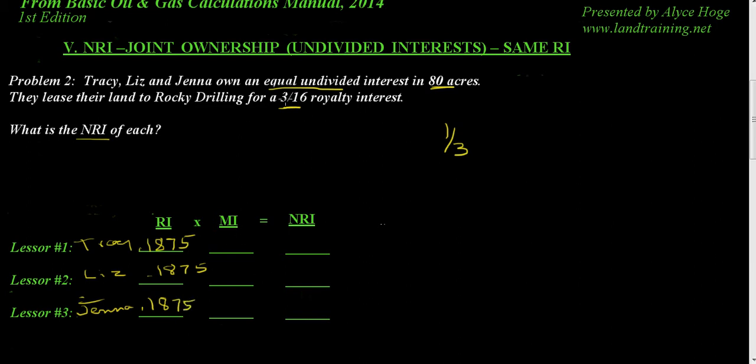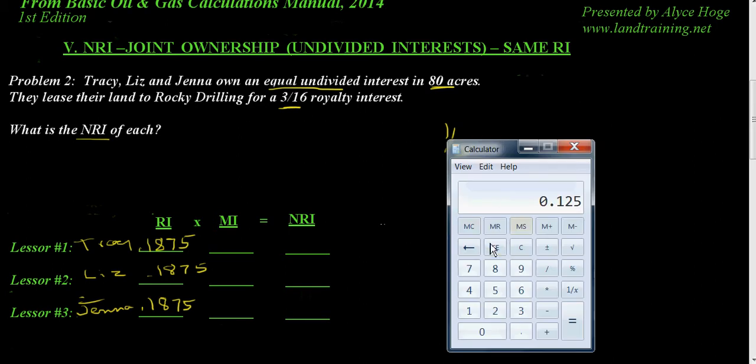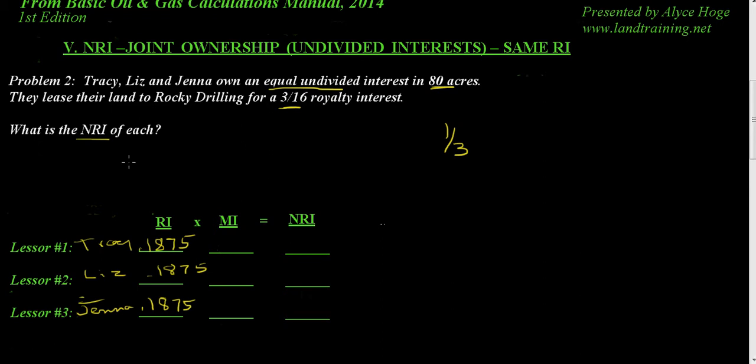So their mineral interest is an equal undivided one-third, but let's get the exact decimal. One divided by three is going to be 0.3333 repeating. So we'll do that for each of these.